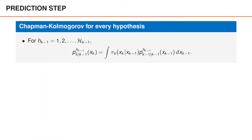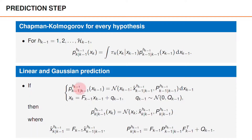To obtain the predicted density for a given hypothesis, we can use the Chapman-Kolmogorov equation stating that the predicted density is the motion model pi k times the posterior at time k-1, integrated over all possible states at time k-1. In the special case where the posterior for a given hypothesis is Gaussian at time k-1 and the motion model is linear and Gaussian, the predicted density is also Gaussian. Its mean and covariance are given by the Kalman filter prediction equations, meaning that the predicted mean is F k-1 times the mean at time k-1, and the predicted covariance is F P F transpose plus Q. These equations are completely analogous to the prediction in the conceptual solution.